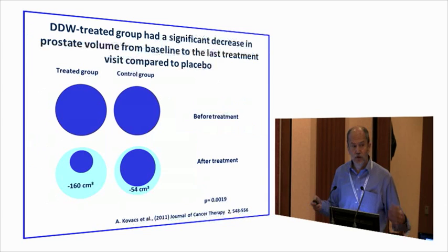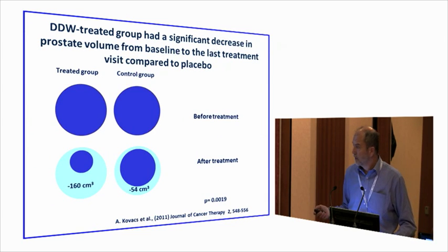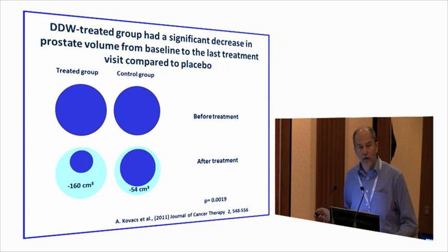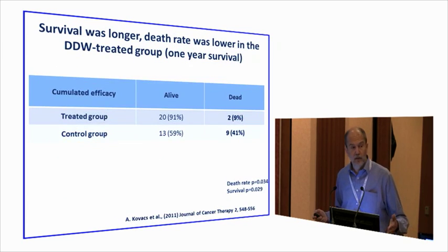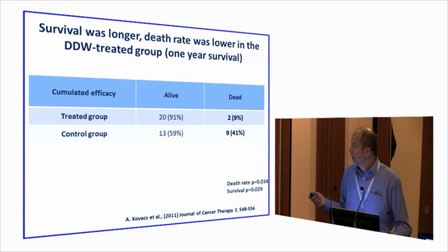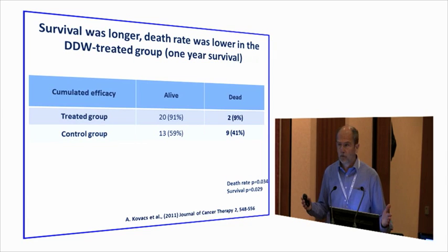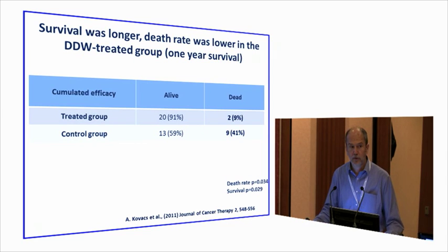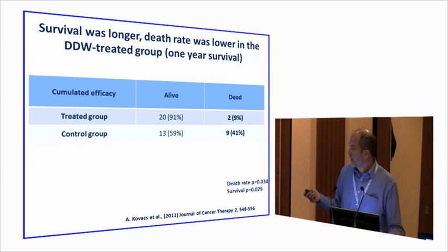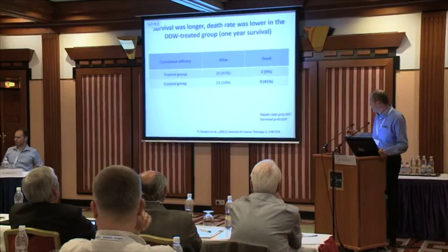When we checked prostate volume changes, the cumulative prostate volume reduced by 160 cubic centimeters in the treated arm versus only 54 cubic centimeters in the placebo arm. Perhaps more importantly, when we checked survival after one year — though the trial lasted only four months — we lost two patients in the treated arm but nine in the placebo arm, suggesting those treated with deuterium-depleted water were very fortunate. Survival rate and survival time were significantly higher, and the death rate was lower in the treated arm.